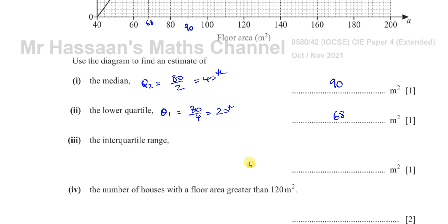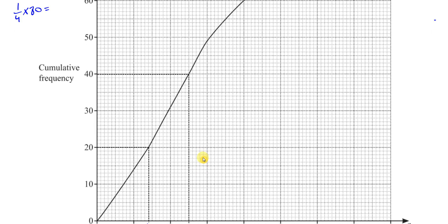The interquartile range is basically the upper quartile minus the lower quartile. So we've got to find what the upper quartile is. Q2 is equal to 90, and Q1 is equal to 68. And Q3, to find it, we've got to go three quarters of the way up. For the upper quartile, you've got to find three quarters of 80, which is going to be 60. So you've got to go to the 60th position. You're going to go up to 60 and see where it hits the curve.